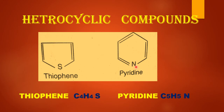The formula of thiophene is C4H4 with one atom of sulfur (S), while that of pyridine is C5H5 with one atom of nitrogen.